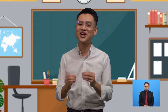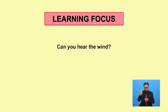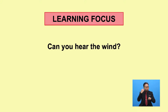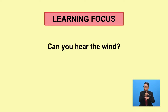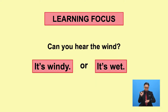Good job, everyone! When you use a noun to talk about the weather, use 'a', 'an', or 'the' — for instance, 'can you hear the wind?' When you use an adjective to talk about the weather, you don't need 'a', 'an', or 'the' — for example, 'it's windy' or 'it's wet.'